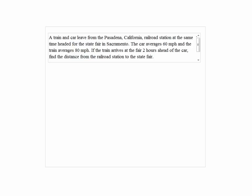So since this is a motion problem, I'm going to make a chart where the top row is for distance equals rate times time, and the second row is for the car, and the third row is for the train.